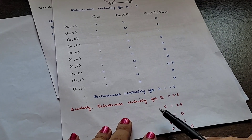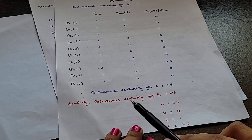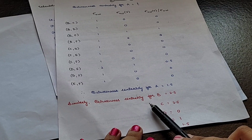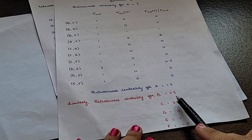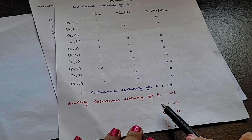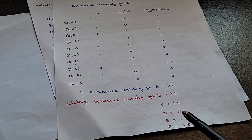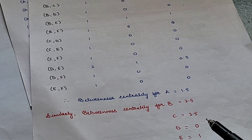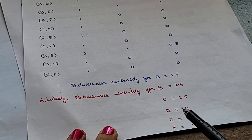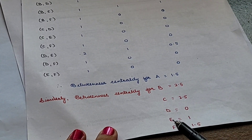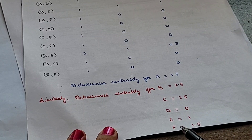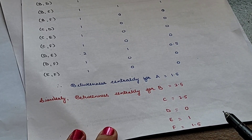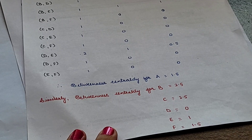Similarly, for practice: betweenness centrality for B comes out to be 2.5, for C it is also 2.5, for D it is 0, for E it is 1, and for F it is 1.5. You can try this example for your practice.